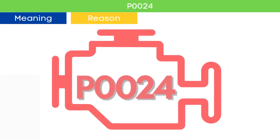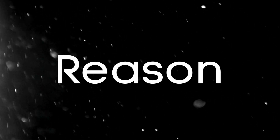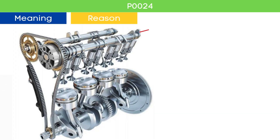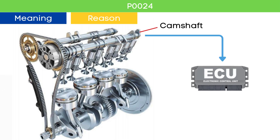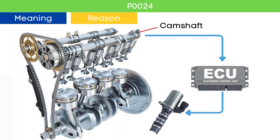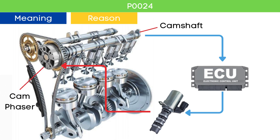Now, let's learn why P0024 was triggered. The camshaft position sensor measures the position of the camshaft and sends this signal to the ECU. The ECU then sends a pulse command to the variable valve timing (VVT) solenoid to advance or delay the cam position based on the engine load and speed. The VVT solenoid adjusts the cam phaser accordingly.